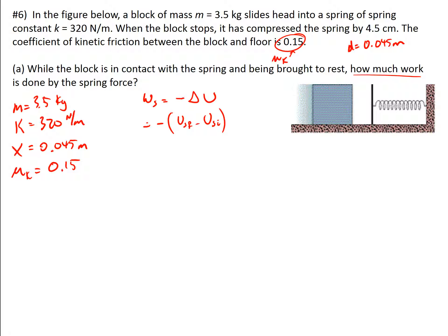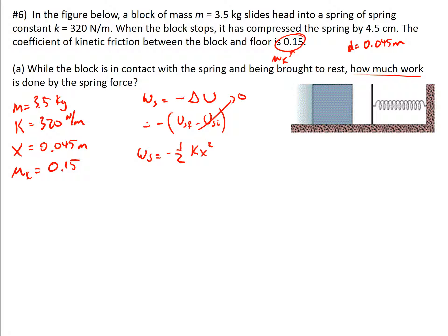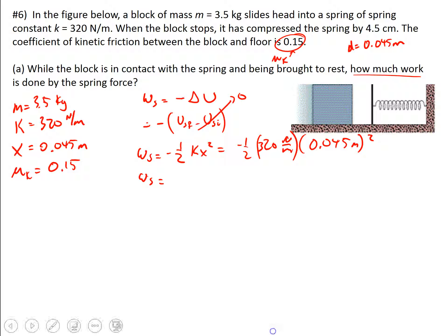We also know that initially there is no potential energy in the spring, because the block is over here sliding into the spring — before it hits, there's no spring potential energy, so the initial potential energy is just zero. That leaves us with: work due to the spring equals negative one-half k x squared. Plugging in values: negative one-half times 320 newtons per meter times (0.045 meters) squared, which gives negative 0.324 joules.